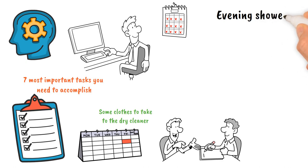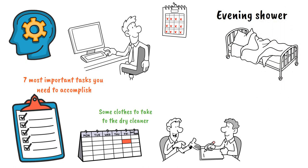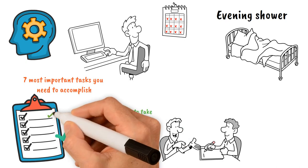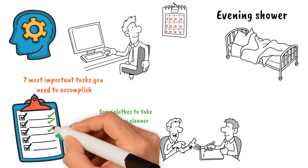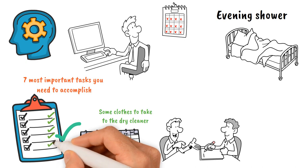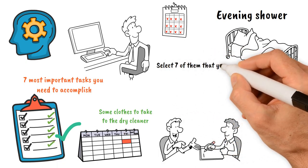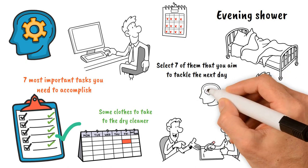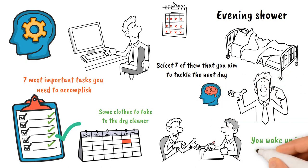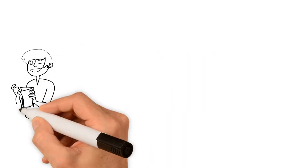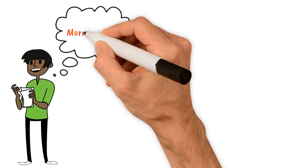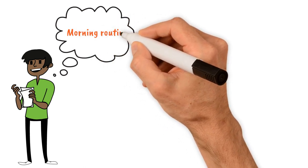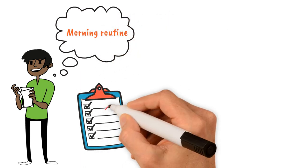After your evening shower, take a moment before jumping into bed and jot down a to-do list for the week. Arrange the tasks in order of priority, from the most important to the least important, and select seven of them that you aim to tackle the next day. This simple yet effective step will save you a lot of mental energy and time when you wake up in the morning. By knowing exactly what you need to accomplish, you can seamlessly move through your morning routine and start crossing tasks off your list right away.